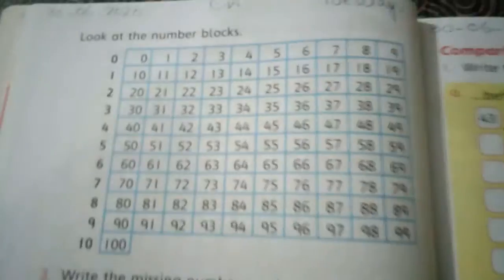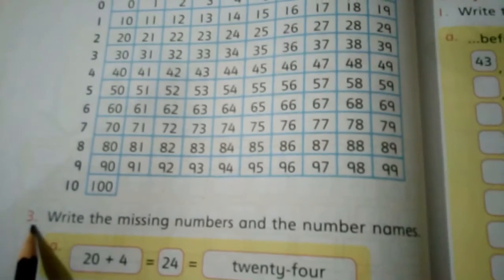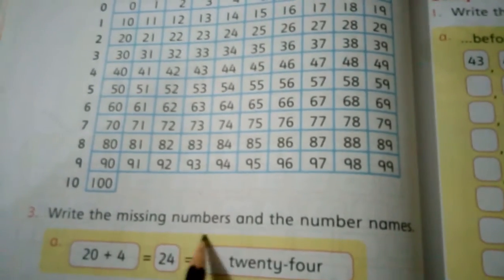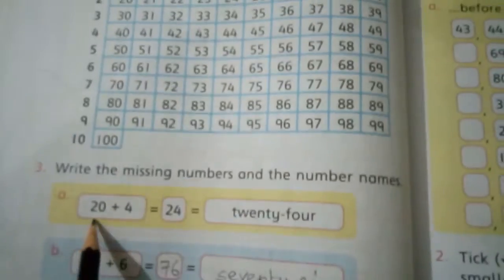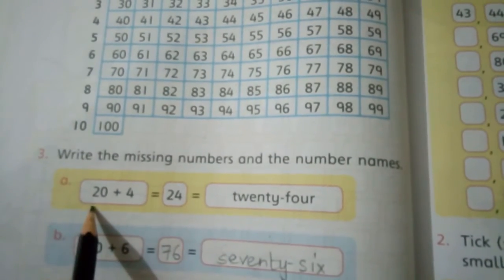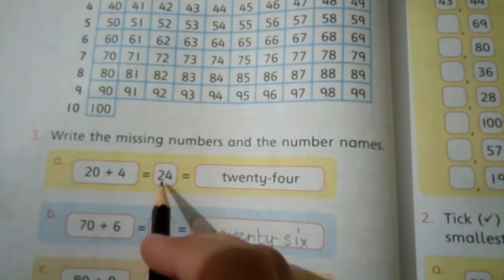Now come to the next question. Question 3: Write the missing numbers and the number names. Now look at the first part - it is done for you, and remaining you will do by yourself.